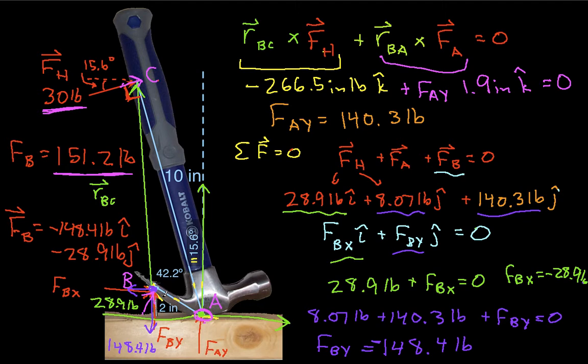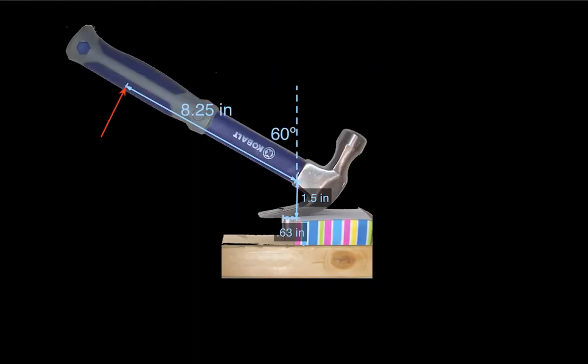Okay, so hopefully that was helpful and made sense. Now, for those of you that really like this sort of analysis, let's look at this case, where I've now added the block that my woodworking text says will make the force applied to the nail much larger, which will then allow me to pull the nail even more easily.